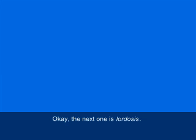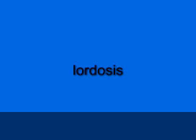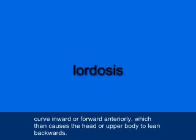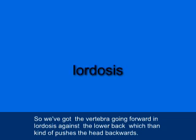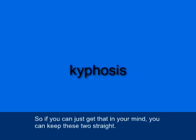Lordosis (L-O-R-D-O-S-I-S), also known as swayback, is when the lumbar vertebrae — the lower back vertebrae — curve inward or forward anteriorly, causing the upper body to lean backward. So in lordosis, the vertebrae go forward in the lower back, pushing the head backward. Compare this to kyphosis, where it's the upper back thoracic vertebrae bowing backward and outward.